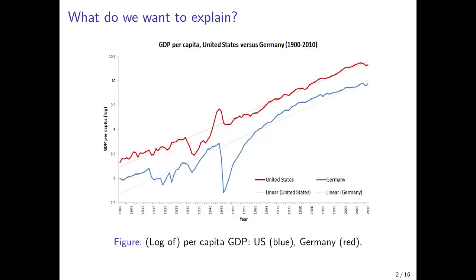We remember what we want to explain. If we look at the evolution of the logarithm of GDP per capita in the United States and Germany, we see a remarkably constant long-run trend increase. That's the first stylized fact we would like to explain. Then we have a persistent gap between the two economies which we want to explain.